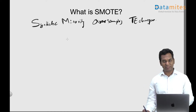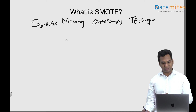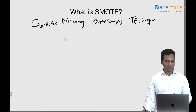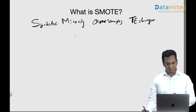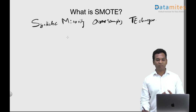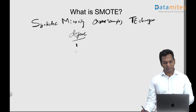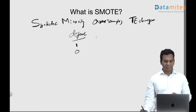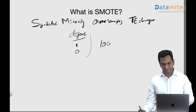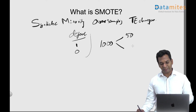What do we mean by balancing? If you have a dataset with two classes — let's say a banking dataset — it contains a number of people who have defaulted on a loan. 'Default' is your target variable with value one, and 'paid back' or non-default is zero. The dataset might have, say, a thousand records, of which 50 people have defaulted and 950 people have paid back.